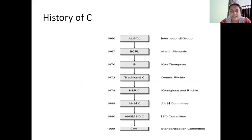First, let us see the history of C. Before the C language came into existence, there were many other previous languages which were developed, and these languages led to the gradual development of C.